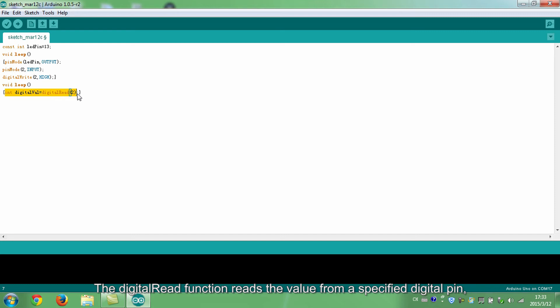The digitalRead function reads the value from a specified digital pin, either high or low. Here the function reads the value from pin 2 to the digital valve.